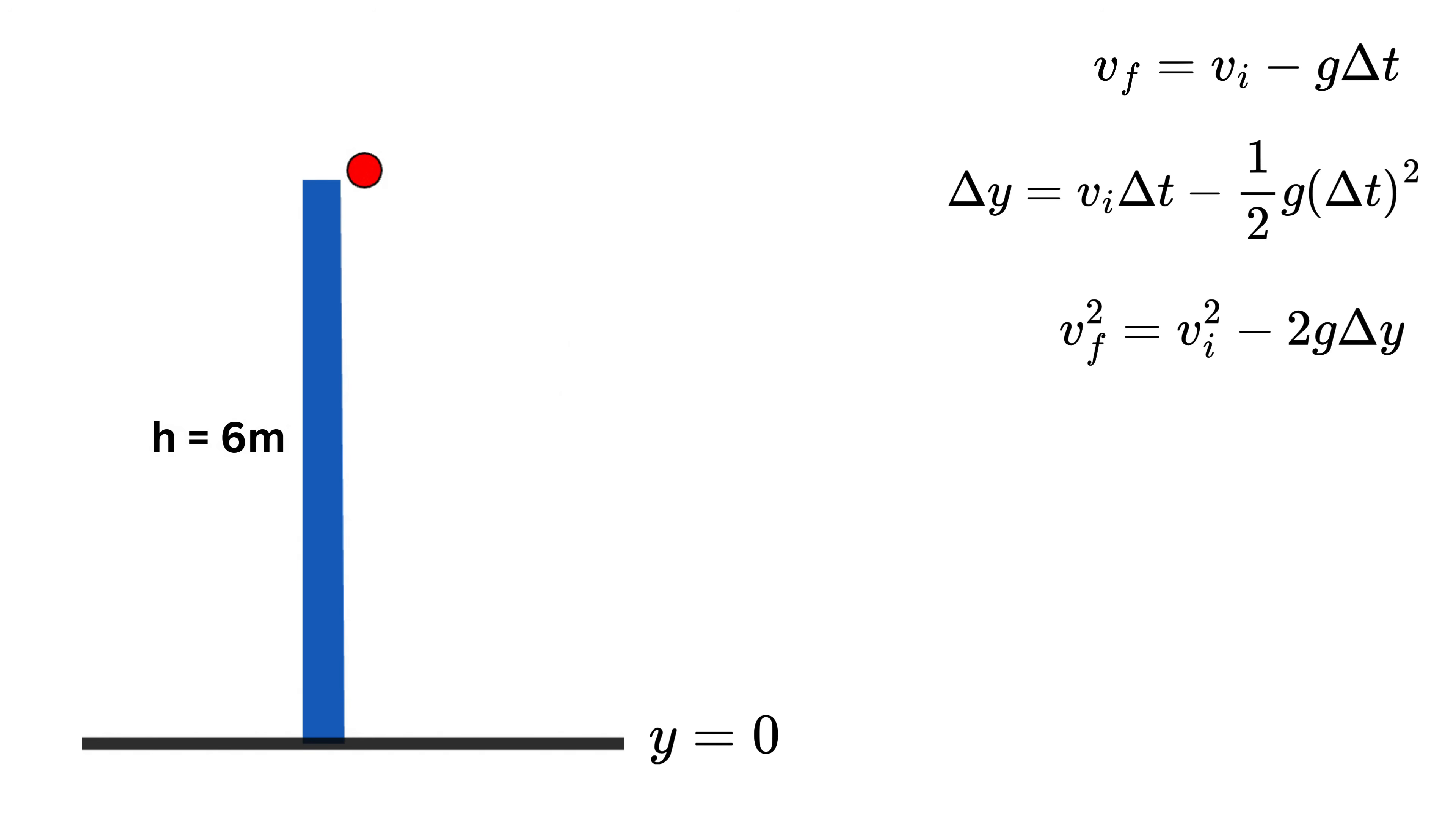Alright, now let's move on to the second problem, where instead of being dropped, the object is thrown vertically upward, so the initial velocity v_i is not zero. We consider a ball thrown vertically upward from the top of the same building of height 6 meters, with an initial velocity v_i equal to 5 meters per second. What will be its motion? Yes, right? It will first rise upward against gravity, slowing down until its velocity becomes zero at the peak.